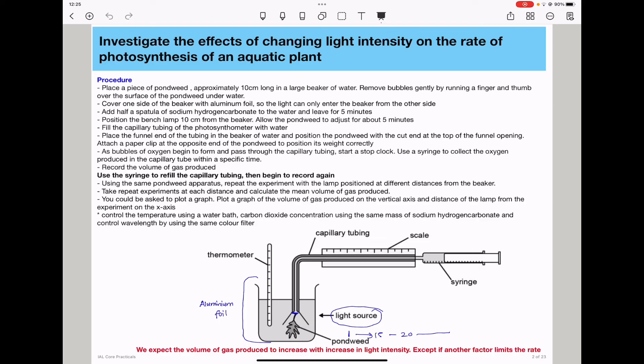So we expect the volume of gas produced to increase with increase in light intensity until another factor limits the rate of photosynthesis. So this brings us to the end of this first experiment. In the next video, we'll be talking about changing wavelength and how that affects the rate of photosynthesis.